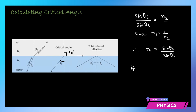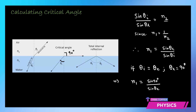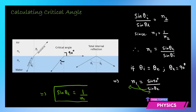If the angle of incidence is exactly the critical angle theta C, then the angle of refraction is 90 degrees. So the relation becomes n1 equals sine 90 over sine theta C. Doing the cross multiplication, sine theta C equals 1 over n1, since sine 90 is 1. This helps us find the critical angle — if we know the refractive index of the first medium n1, we can find the critical angle, and vice versa.